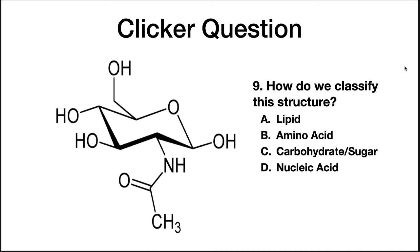As part of this course, I expect you to be able to recognize chemical structures. For example, I think it would be fair game for you to be able to identify the structure of peptidoglycan. To give you some practice, try to identify this structure. The correct answer is a carbohydrate, or sugar. By the way, this is N-acetylglucosamine.